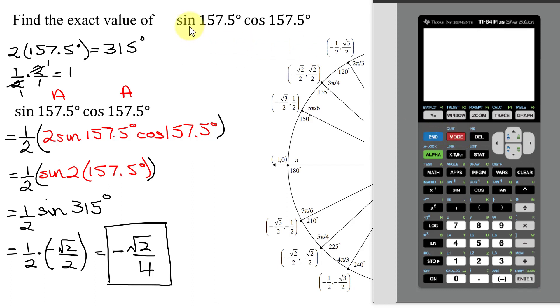And now let's find the sine of 157.5 degrees times the cosine of 157.5 degrees. So I have the sine of 157.5 degrees, close parentheses, times the cosine of 157.5 degrees, close parentheses, hit enter. There's the approximate value. Now let's see if this value matches it.